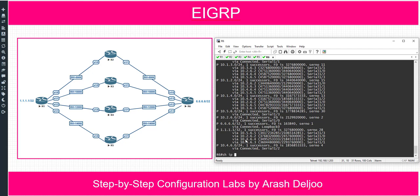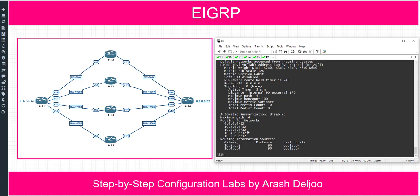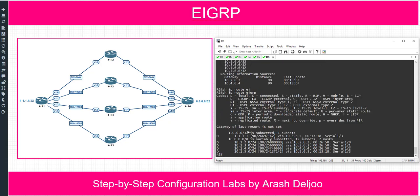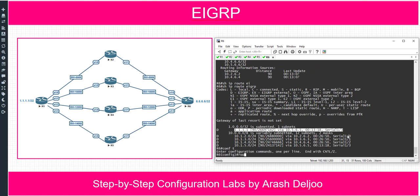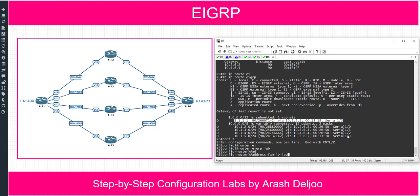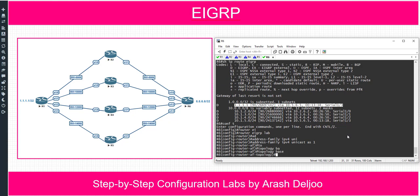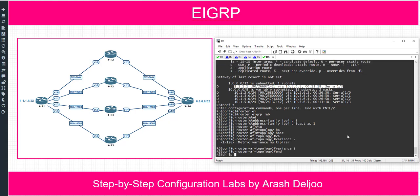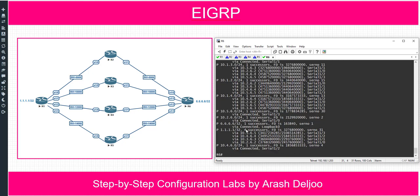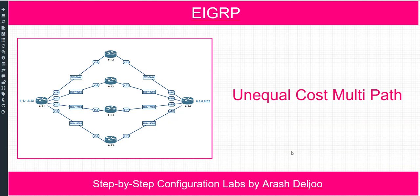'Show ip protocols' shows the maximum metric variance is currently 1, and 'show ip route EIGRP' shows only one path to quad1. Let me configure the variance on R6, which uses named mode: 'router EIGRP lab', then 'address-family ipv4 unicast' with AS number 1. Under 'topology base', configure 'variance 2'. Now 'show ip EIGRP topology all-links' shows four successors, and 'show ip route EIGRP' confirms all four paths are in the routing table. This completes the configuration of unequal cost multipath or unequal load balancing in EIGRP.